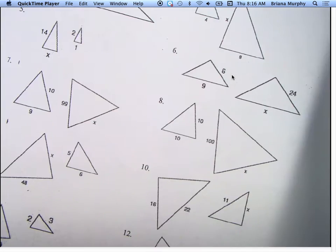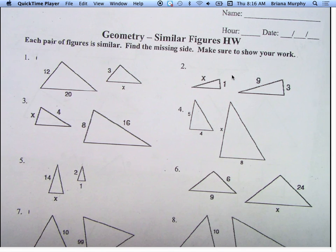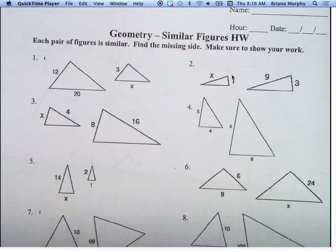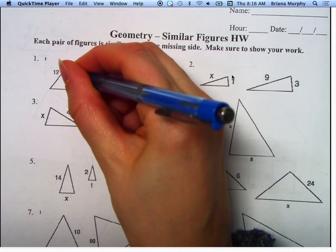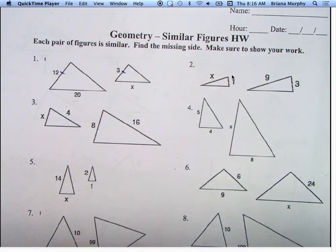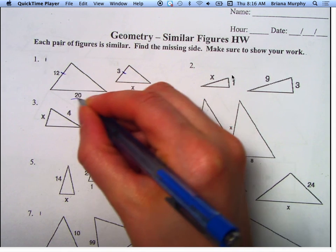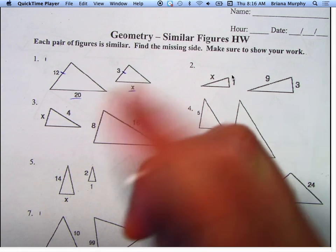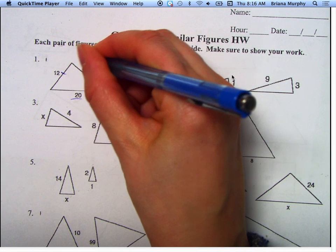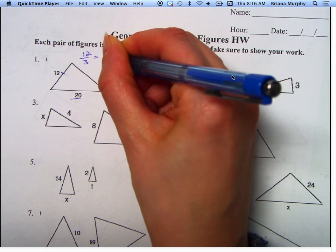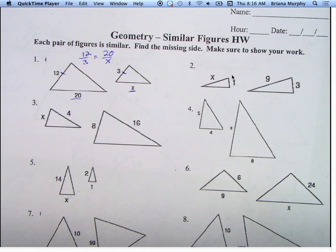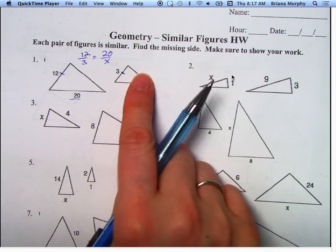The homework is all on similar figures, so you're finding the missing side. We have to make sure they are set up correctly, so the similar side matches the similar side. We get that 12 and 3 match each other, right? So we're going to go 12 over 3 equals 20 over X.